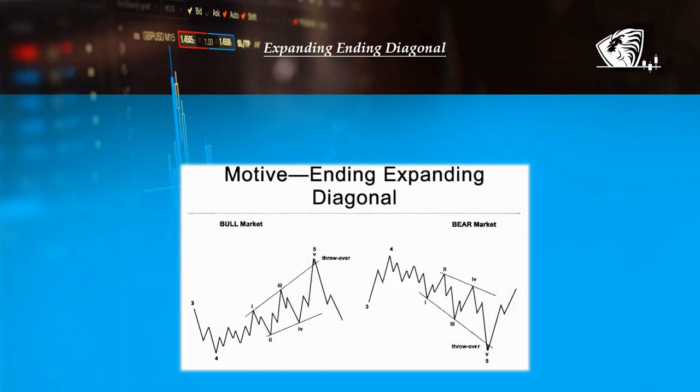An ending diagonal can also take an expanding shape, in which the lines are diverging. All other characteristics apply as an ending diagonal, except for the fact that wave 3 could be the shortest swing, and wave 5 is the strongest.